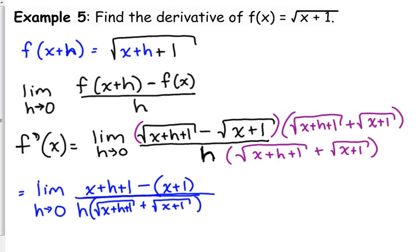We do not multiply out the bottom. We just need to rewrite it. Now, look at what happens on the top. If we distribute that negative, what are we left with? H. That's it. The x cancels. The 1 cancels. All we're left with is h.